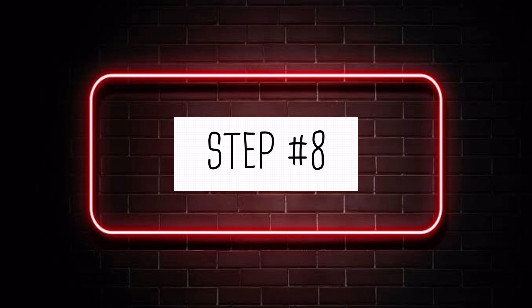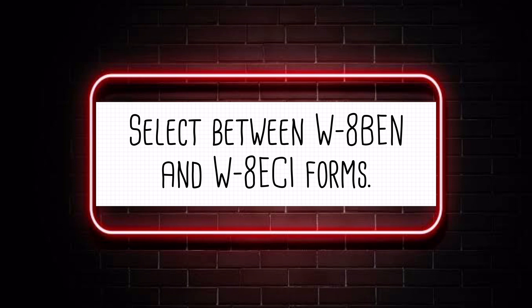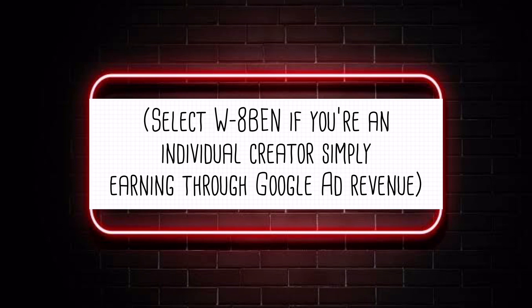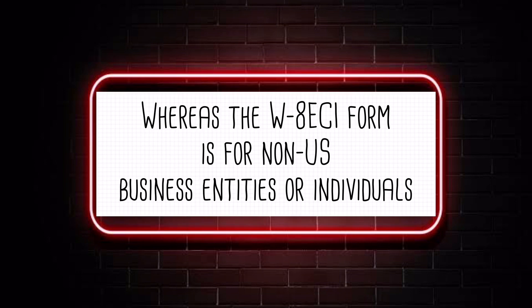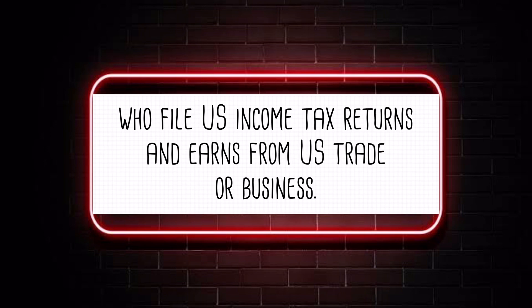Step 8. Select between W8-BEN and W8-ECI forms. Select W8-BEN if you're an individual creator simply earning through Google Ad Revenue. Note: W8-BEN is for non-U.S. individuals and is used to claim tax treaty benefits. Whereas the W8-ECI form is for non-U.S. business entities or individuals who file U.S. income tax returns and earn from U.S. trade or business.